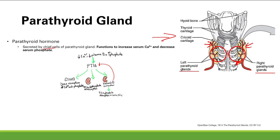The function of parathyroid hormone is to increase serum calcium and decrease serum phosphate. Whenever you see parathyroid hormone, expect that serum calcium will go up and serum phosphate will decrease.